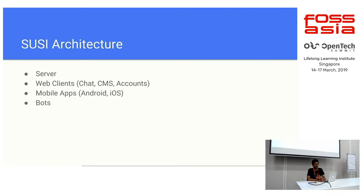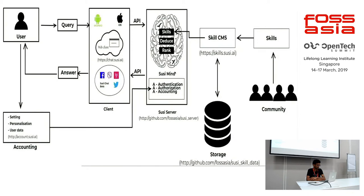This is the entire wireframe about how everything is working. As you can see, this is the brain which is the server that we have hosted online. We have all these clients which can talk to the server via an API request. Users can just send a query via any client and then talk to the server using that. We also have all the settings, personalization, and user data oriented for the user. Here we have the Skills CMS and here we have skills. What basically is a skill? Skills are something aggregated by the community.